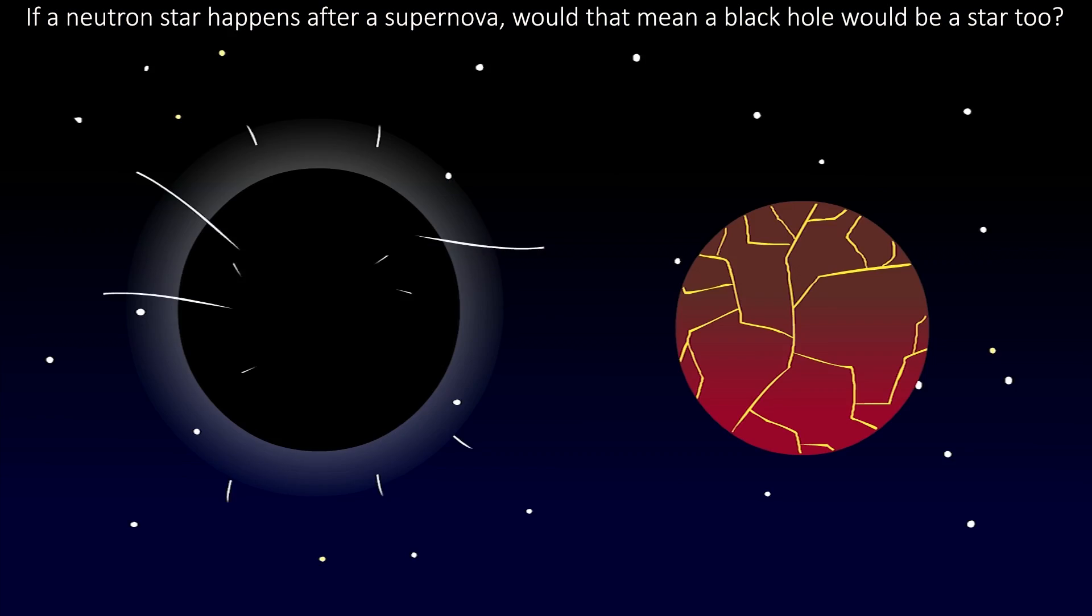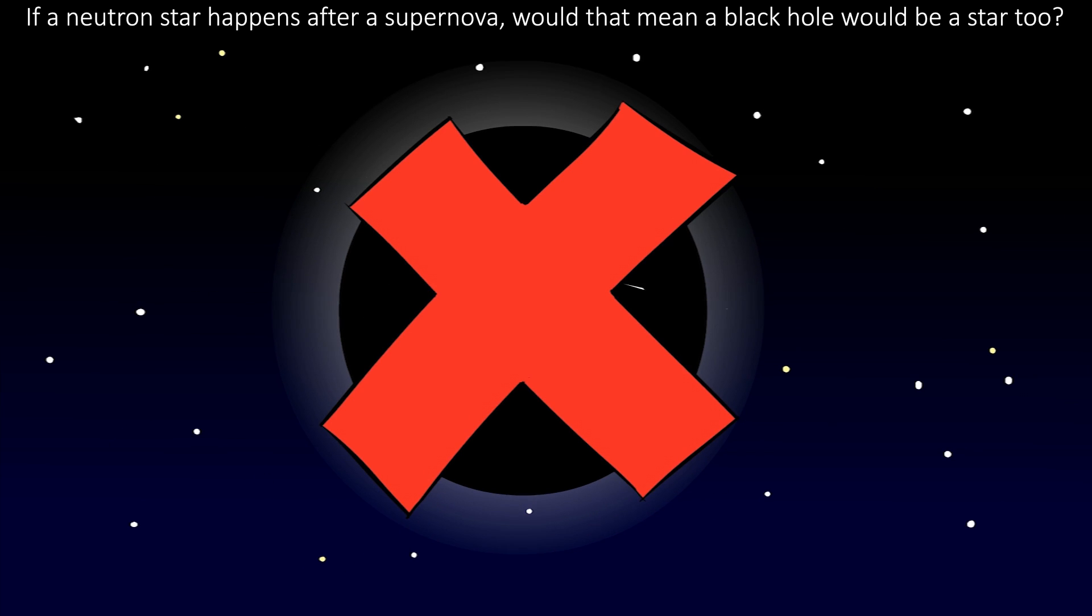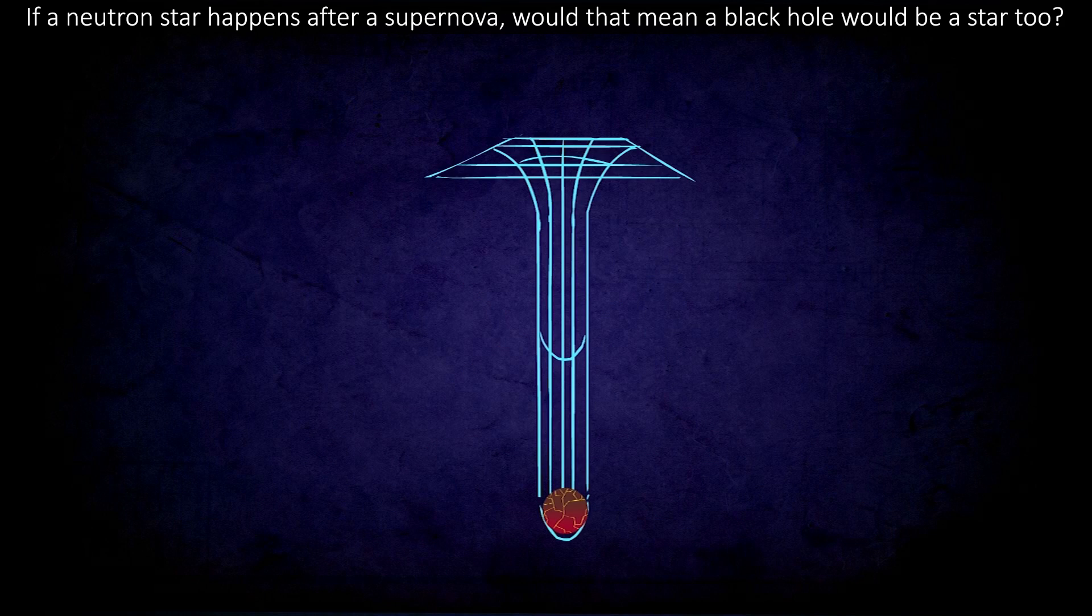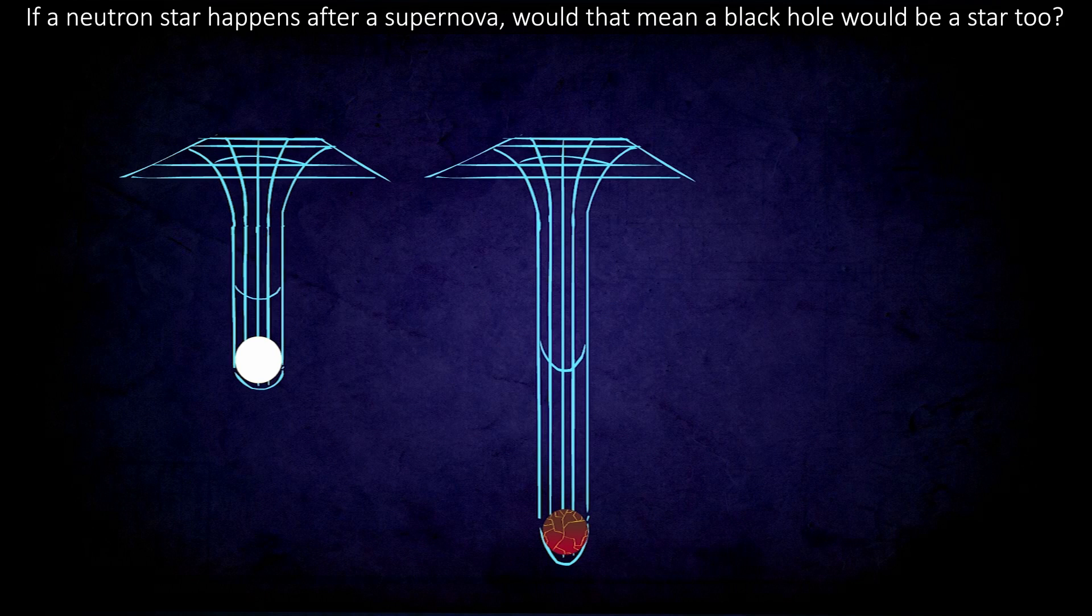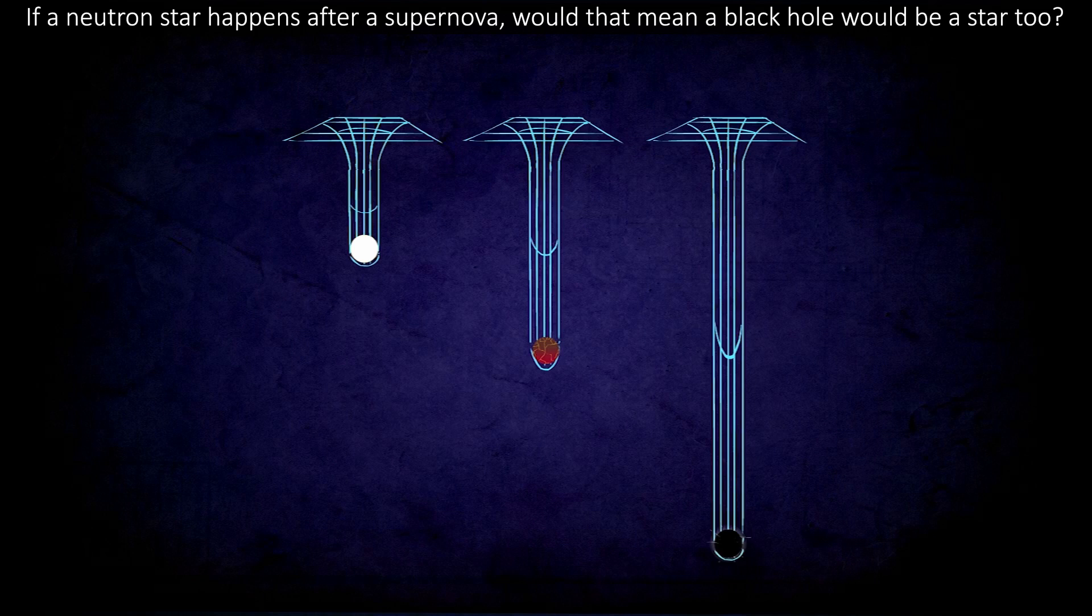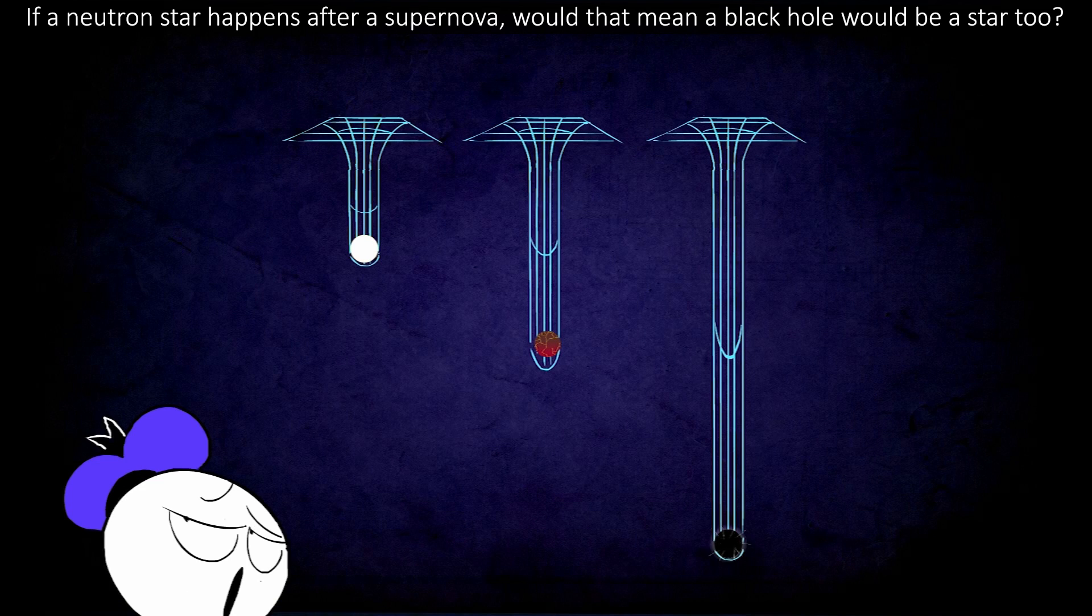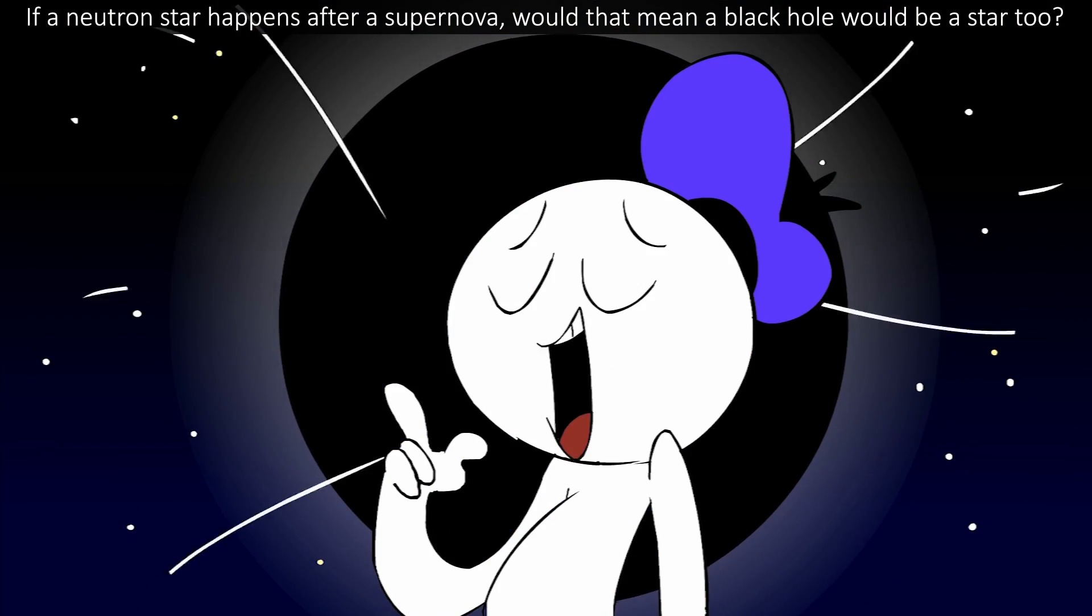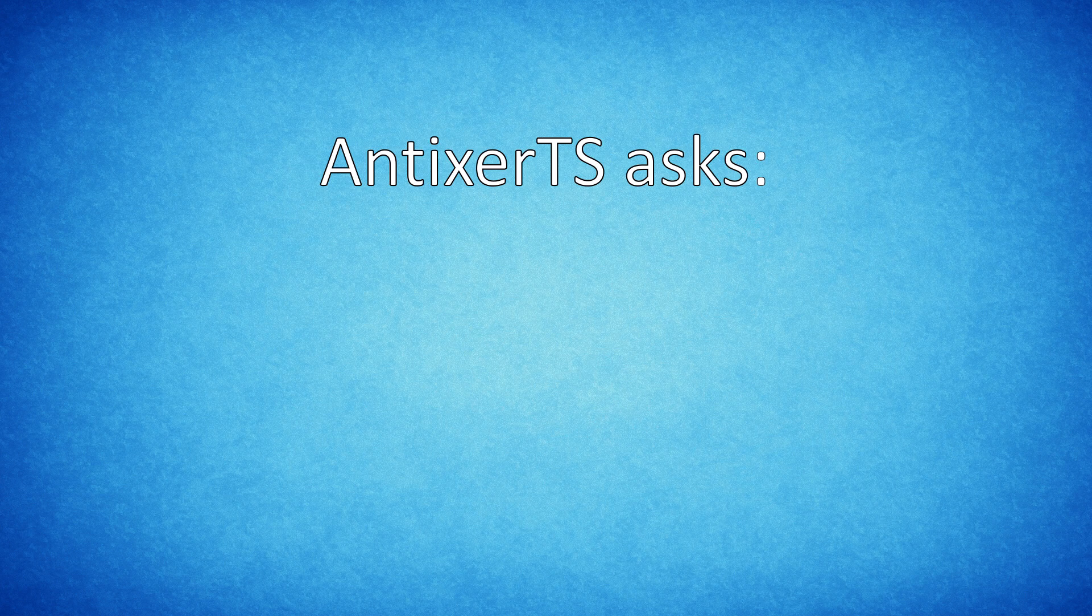No, despite both forming during a supernova, a black hole is not considered a star. Neutron stars are the densest form of a star but do not have the required mass to become a black hole. The black hole will form when the star is three times the mass of the sun. Also, not all black holes are formed during a supernova.